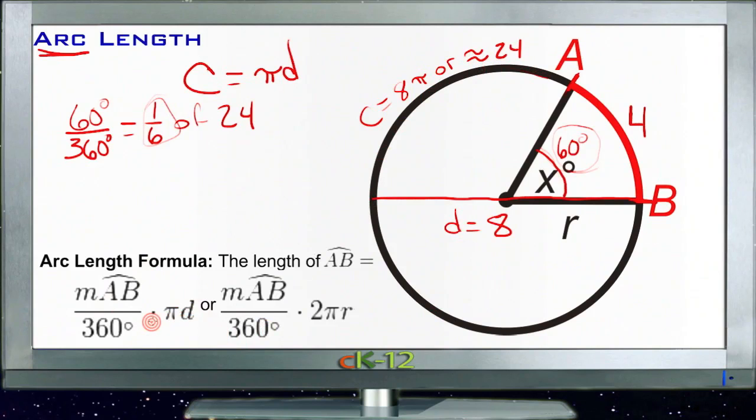If you want to see that as a cohesive formula, you take the measure of your arc in degrees and divide it by 360 degrees. That gives you what portion of the circle you have, and then you multiply that by πD, which is your circumference. Or you could do the same thing and multiply by 2πr, if what you have is the radius.